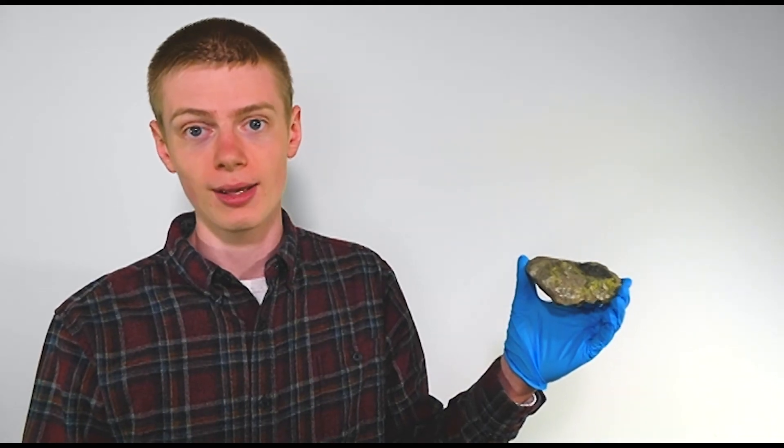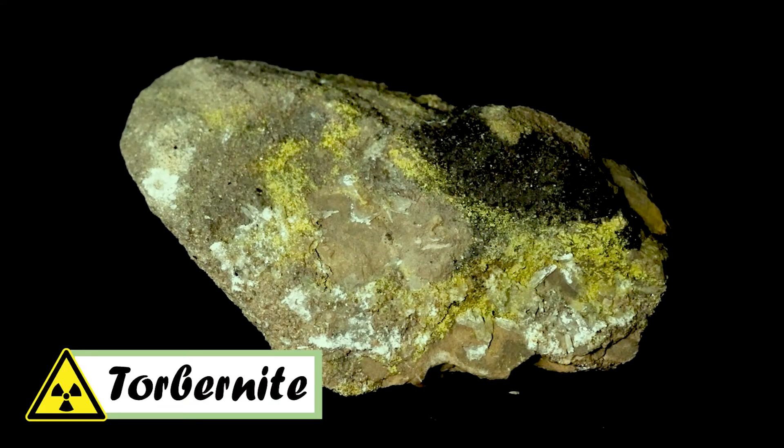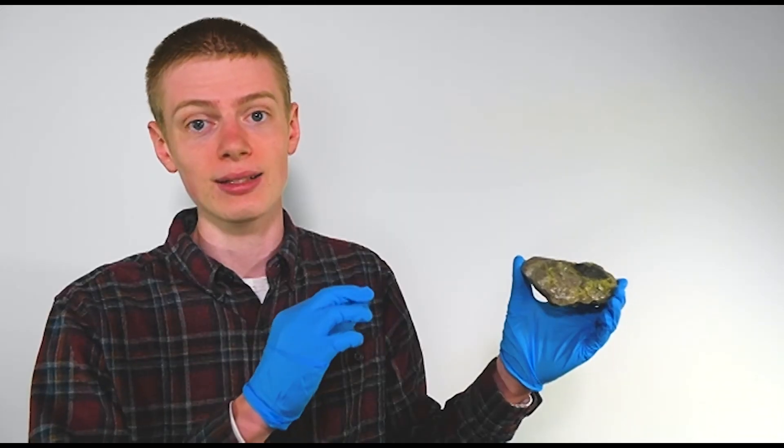This is torbernite, another uranium mineral. It is this kind of greenish film that you see on the rock, which is composed of all of these tiny little crystals. And it gets this beautiful color from the copper, which is contained in it.